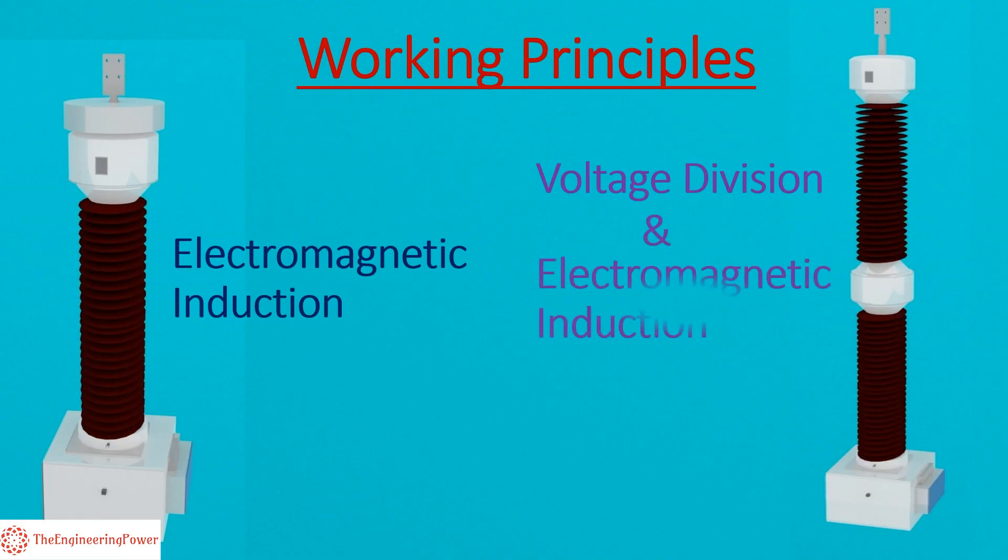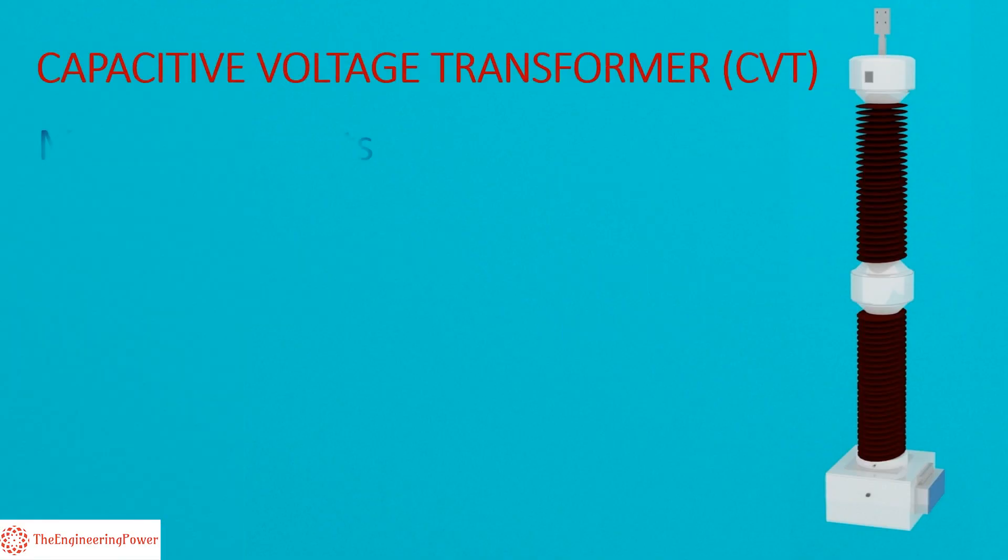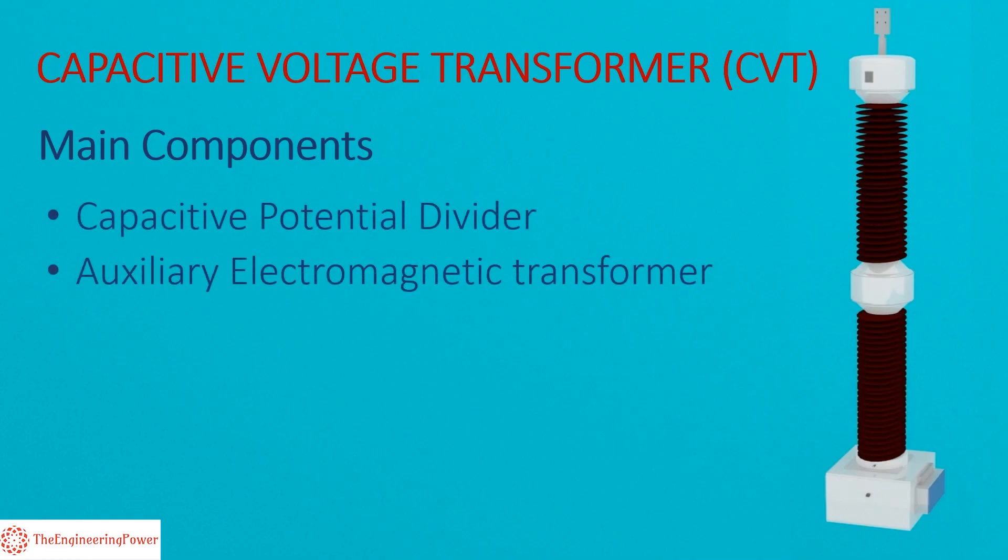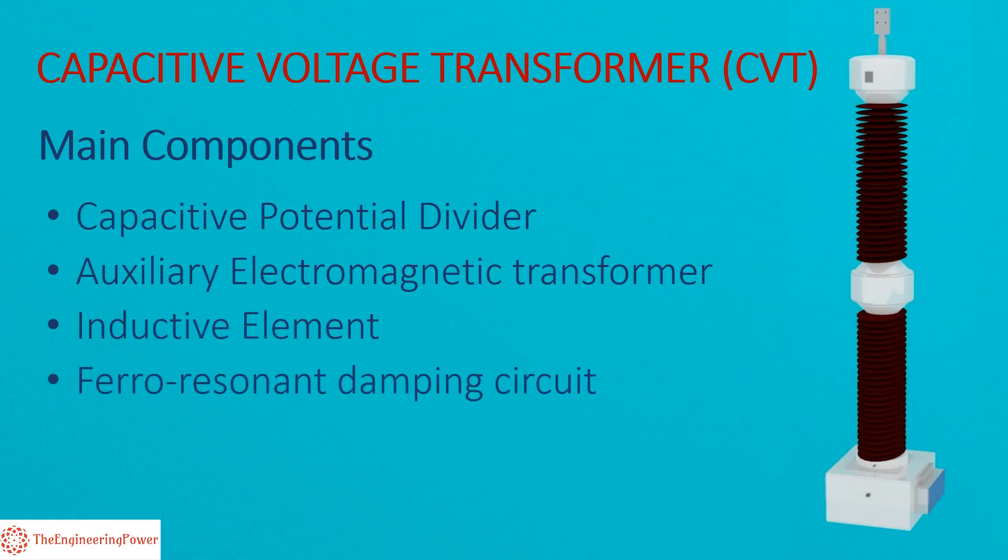CVT consists of four main sections: capacitive potential divider, auxiliary electromagnetic transformer, inductive element, and ferro-resonant damping circuit. All of these sections are utilized together to step down the extra high voltages to a safe lower level efficiently.